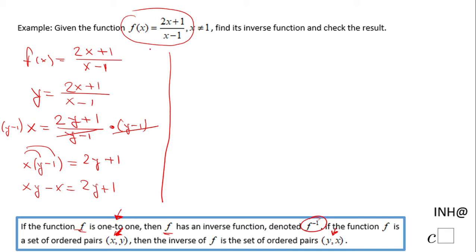So let's see what we can do here. One way to do it is by subtracting 2y, and we have here xy minus 2y minus x equals 1. Add x...